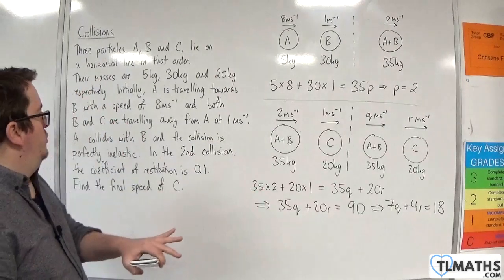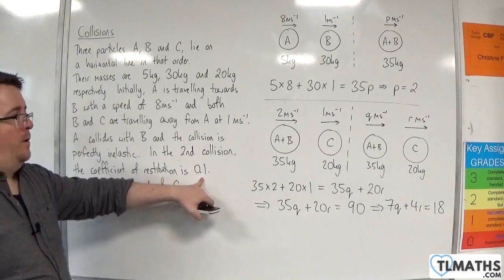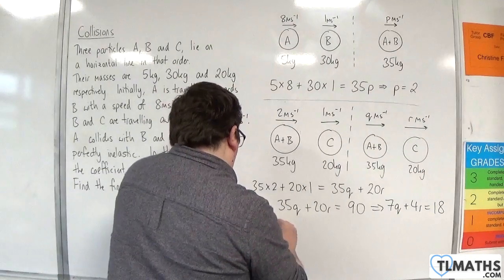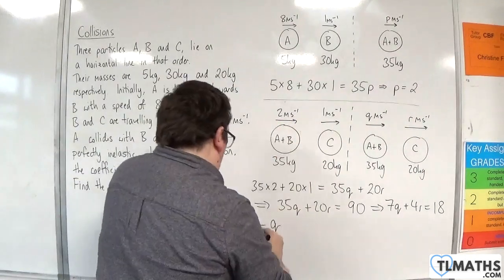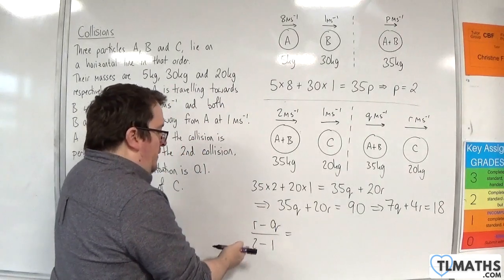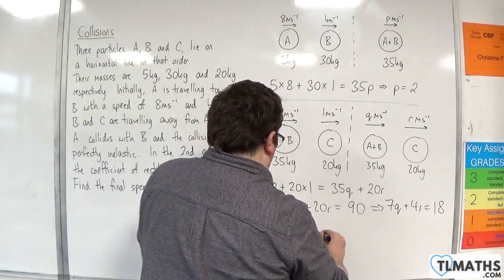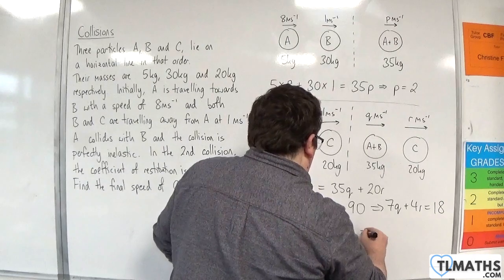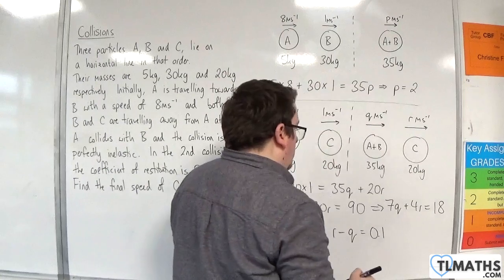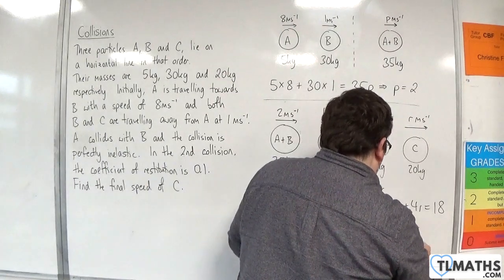Now we'll use the coefficient of restitution, which we know is 0.1 in this second collision. So we have R take away Q divided by 2 take away 1. The speed of separation divided by the speed of approach must be equal to 0.1. So R minus Q must be equal to 0.1. Now we can solve these equations for Q and R.